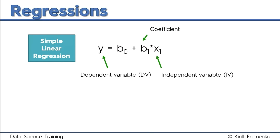Then b1 is a coefficient for the independent variable. It describes how a unit change in x affects a unit change in y — think of it as the translator or multiplier, the connector between y and x. You can't always say x is directly proportional to y; there might be a coefficient of proportion to which that change is inflated or deflated. And b0 is the constant term — we'll talk about the constant in just a few seconds.